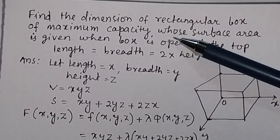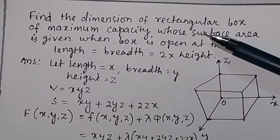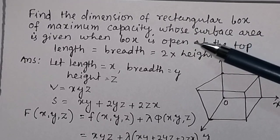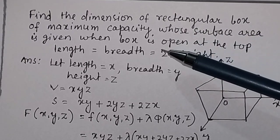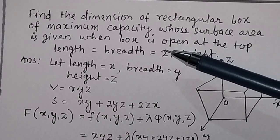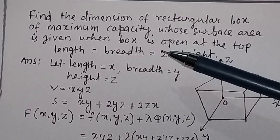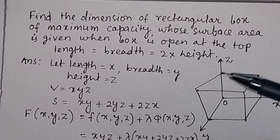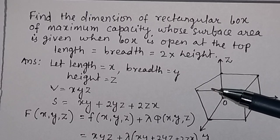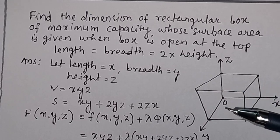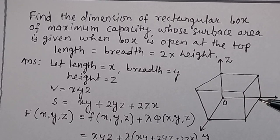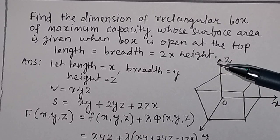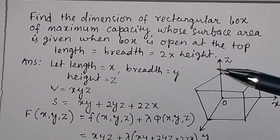Find the dimension of the rectangular box of maximum capacity whose surface area is given when the box is open at the top. Here the box is open at the top. Suppose x is the length, y is the breadth, and z is the height.